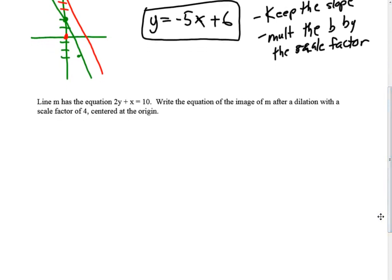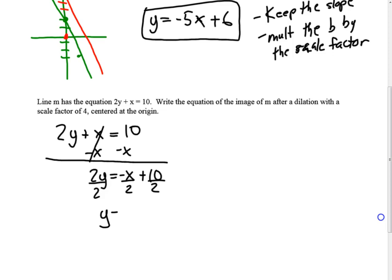Another one. Line m has this equation. Write the equation of the image of m after a dilation with a scale factor of 4 centered at the origin. Here, we need to do a little bit of algebra first to rewrite the form of this. If we subtract x, we get 2y equals negative x plus 10. Divide everything by 2, so y equals negative 1 half x plus 5.